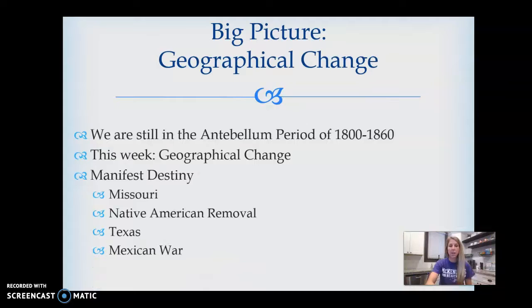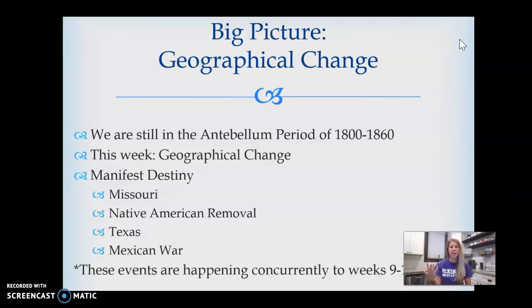This week we're going to cover four events: the Missouri Compromise, Native American removal — which we've already talked about when we did Jackson — Texas, and the Mexican War. These things are happening at the same time as cotton, manufacturing, transportation, growth of cities, and the topics we did last week.